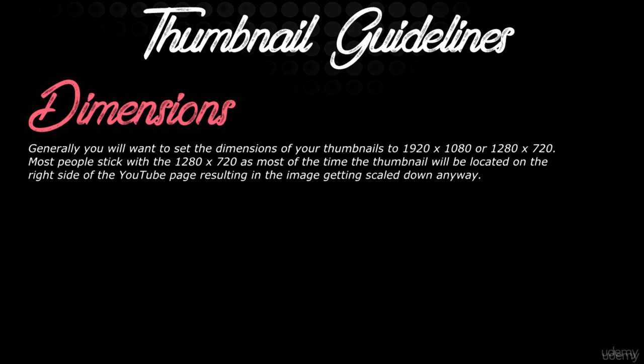Most of the time your thumbnails are going to be located on the right side of YouTube. They're not going to be scaled up too much unless somebody's watching on a big screen TV or a big monitor. But even then, the chances of your thumbnail getting scaled up to that degree is very low. So most people just stick with 1280x720 mainly because it's easier to work on a smaller canvas. You don't lose image quality on assets that you're importing into Photoshop or GIMP or whatever image editing software you're using.